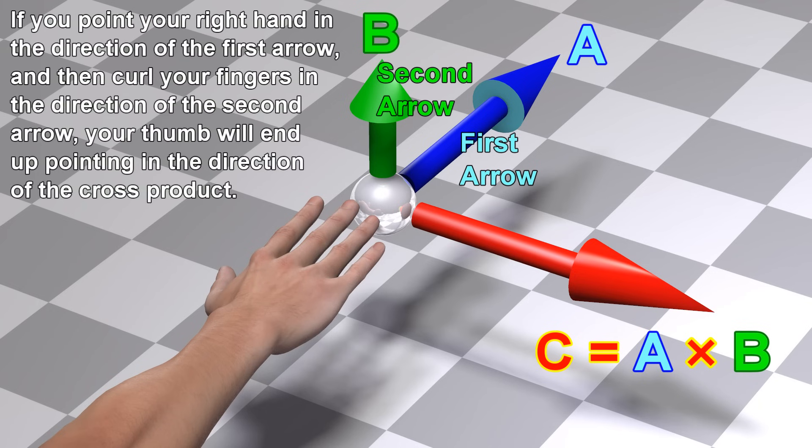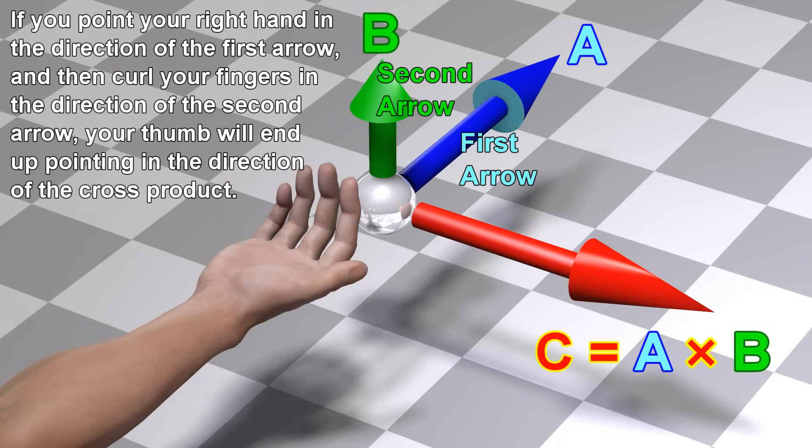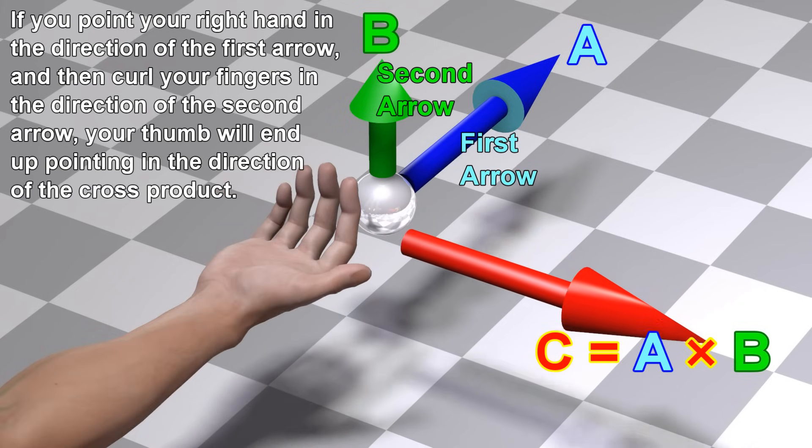If you point your right hand in the direction of the first arrow and then curl your fingers in the direction of the second arrow, your thumb will end up pointing in the direction of the cross product.